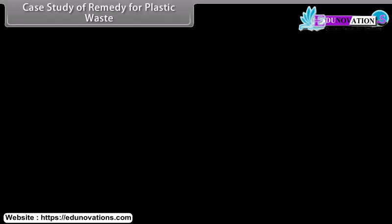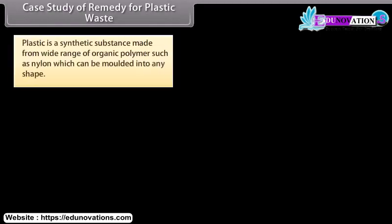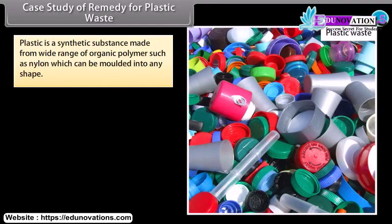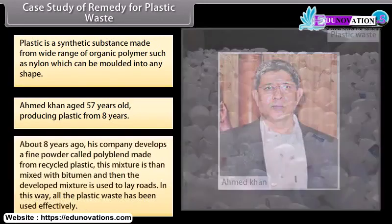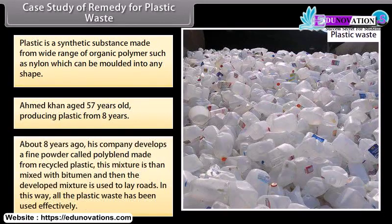Case study — remedy for plastic waste: Plastic is a synthetic substance made from a wide range of organic polymers such as nylon, which can be moulded into any shape. Ahmed Khan, aged 57 years, has been producing plastic alternatives for 8 years. His company developed a fine powder called Polyblend, made from recycled plastic. This mixture is then mixed with bitumen and used to lay roads, effectively utilizing plastic waste.